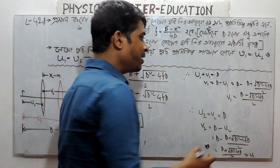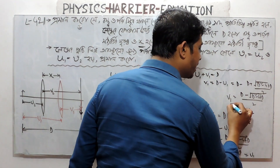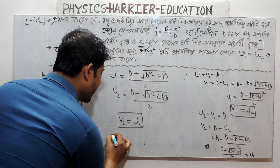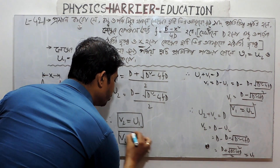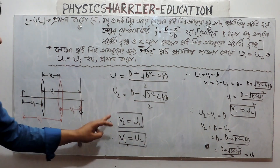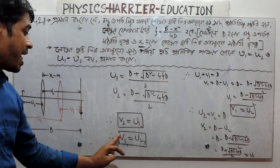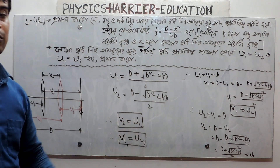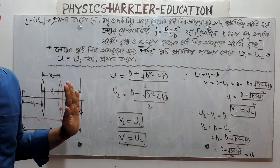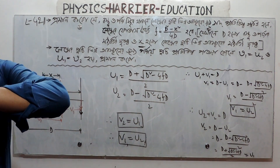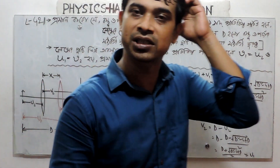d minus 1 is equal to u2. 2 is equal to u2. V1 is equal to u2. V1 is equal to u2. 2 is equal to u2.